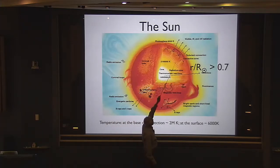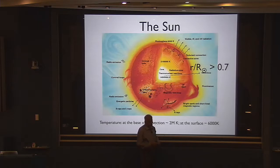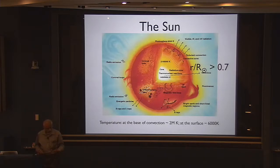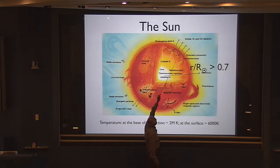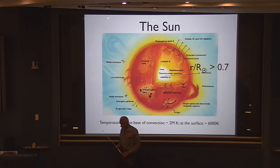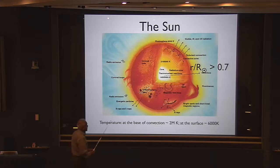You have the transport of energy from here on — about seven-tenths of the radius outwards — through the bodily motion of fluid, just as you would imagine happening in the atmosphere, or what you might see in your kitchen if you boil water on a stove. This is the part of the sun's internal structure I'm interested in, where the so-called convection of the fluid takes place, carrying thermal energy outwards.